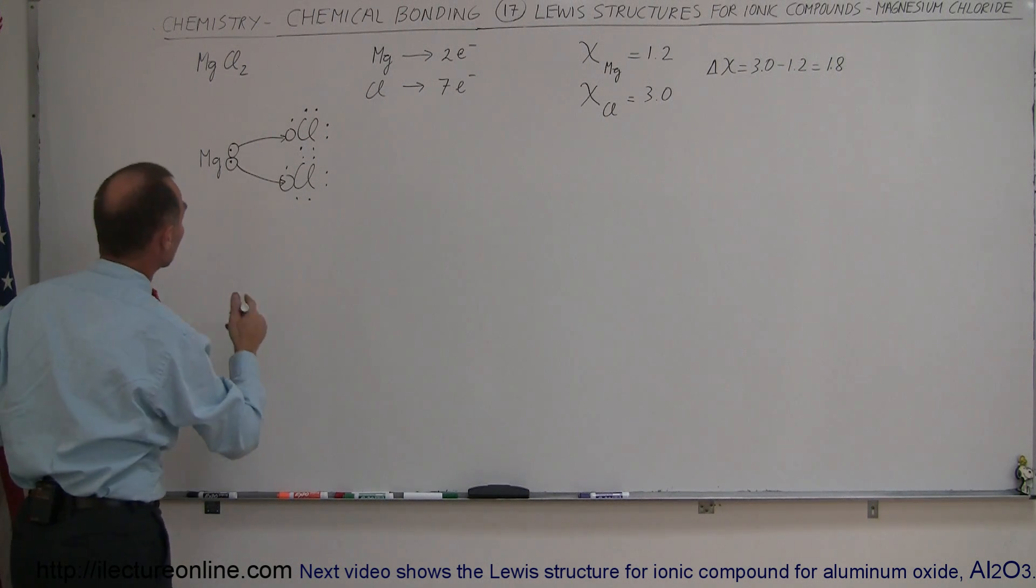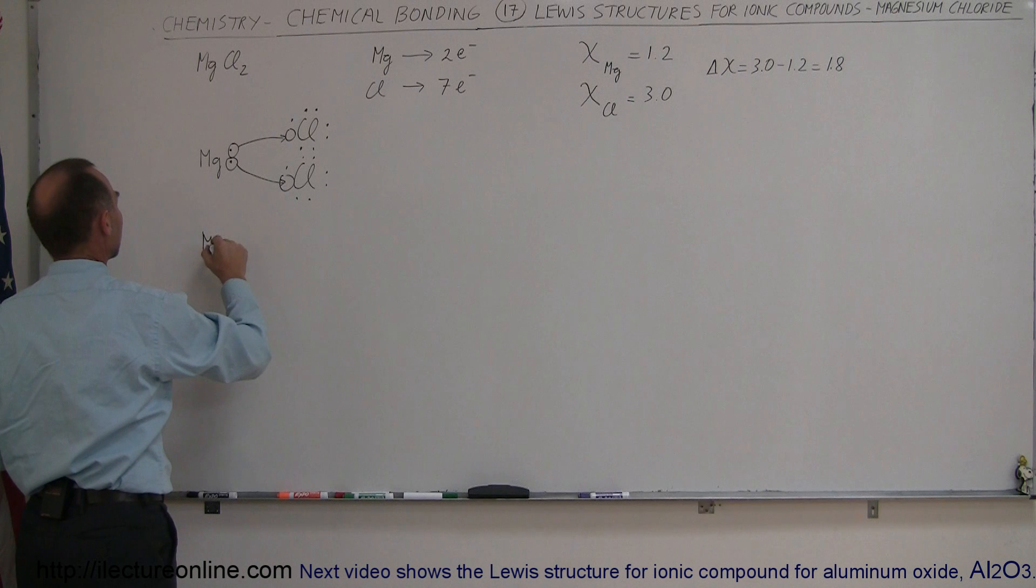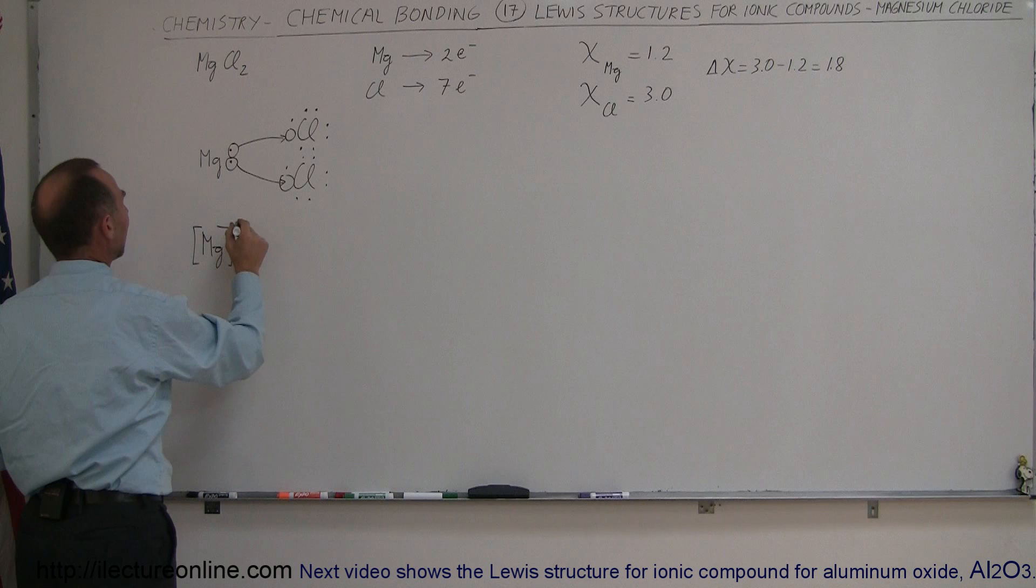The way that's indicated using the Lewis structure mechanism is that we have magnesium here. We put brackets around it indicating that's an ion, and that's now going to be a two-plus.